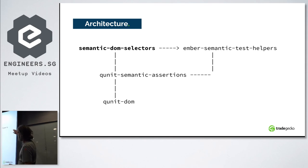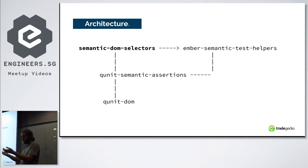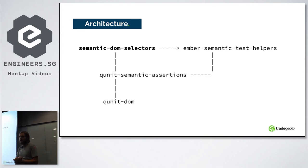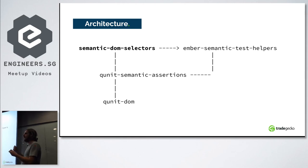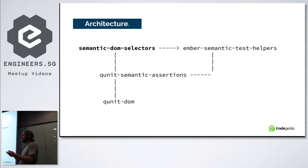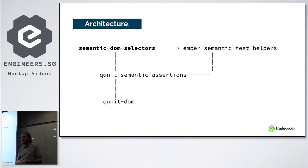Inside the ember-semantic-test-helpers package there's an engine with finders and actors. The finders are the DOM selectors — the screen reader part. Once the element is found, it needs to be acted upon. A select box is probably the most interesting component — no one enjoys using the native HTML select box, so we all write our own, and making that semantically correct is very difficult. The acting engine walks the DOM tree based on correct attributes and falls back on common mistakes to help improve things.